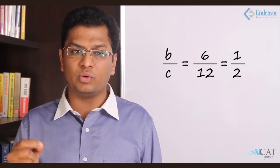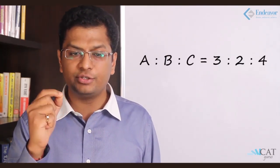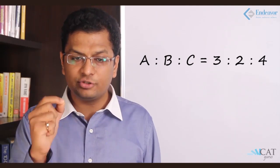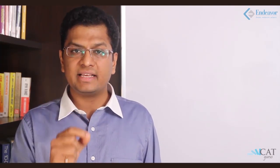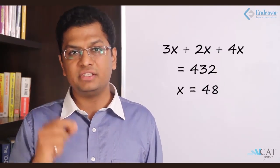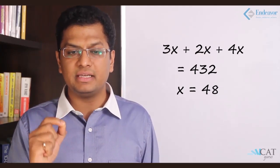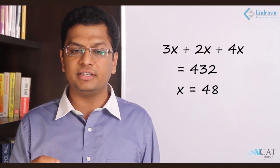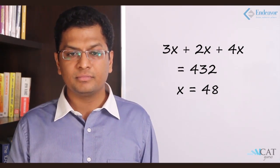If I have to put it into a continuous one, then A is to B is to C is nothing but 3 is to 2 is to 4 the way we did it last time. The 2 in the first case will change the second one into 2 and hence the 2 becomes 4, so 3 is to 2 is to 4. If I add all of them, 3x which is A, 2x which is B and 4x which is C we total up to 432, so x is 48. This is how ratio and proportion can be used to solve a variety of problems.